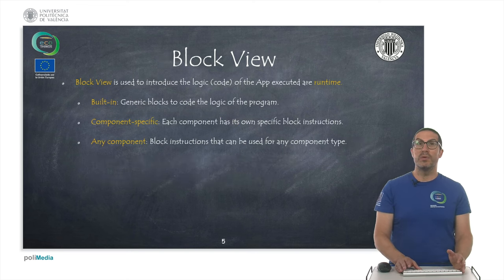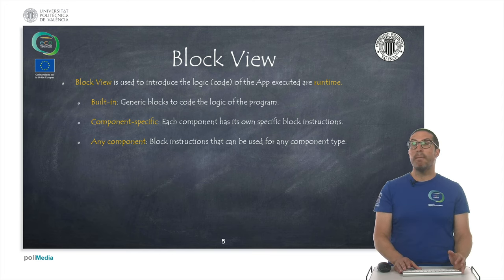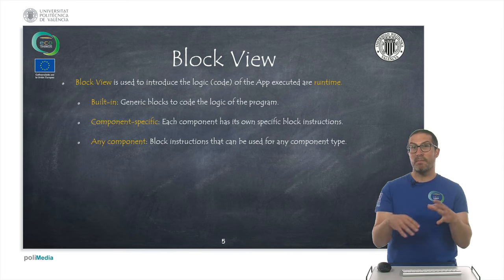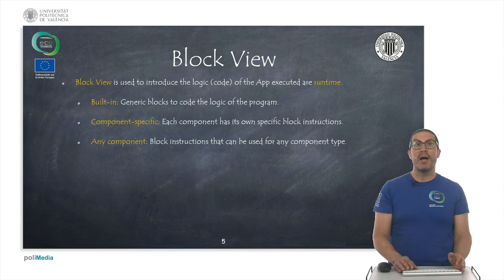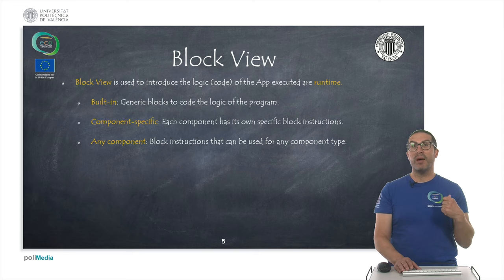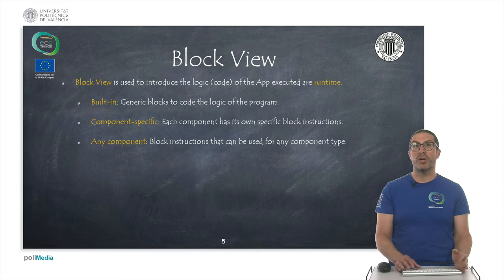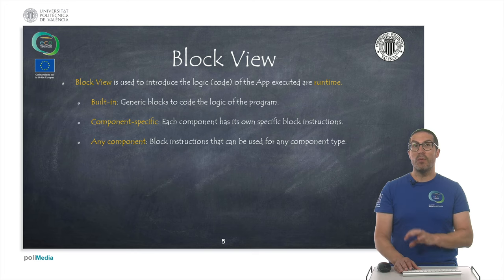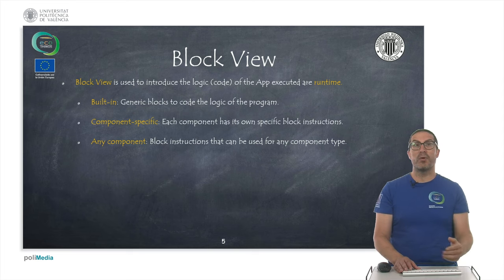Then we have the block view. This is where we introduce the actual code or the logic for our app. What we put in the block view is the actual code that will be executed at runtime. We can distinguish between different kinds of blocks within the block view. We have built-in blocks, which are generic blocks to program the logic of any program. We also have blocks specific to every kind of component — when you select a component, you will have block instructions that are specialized for that kind of component.